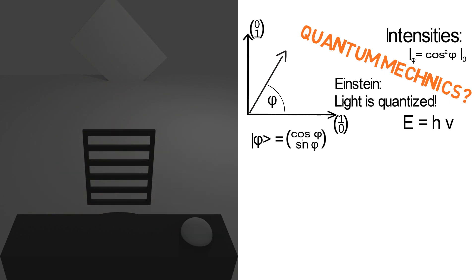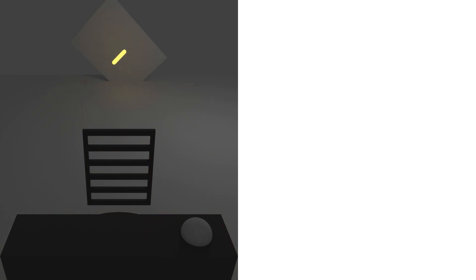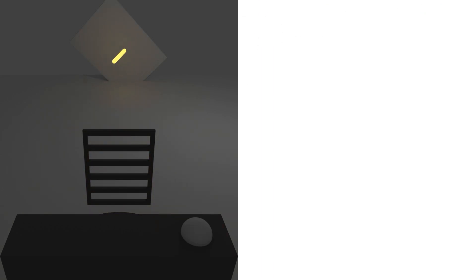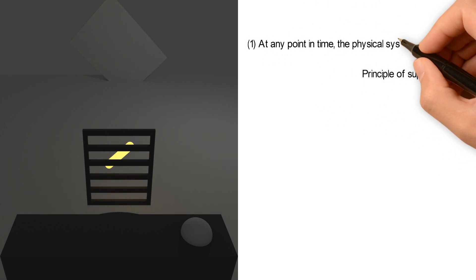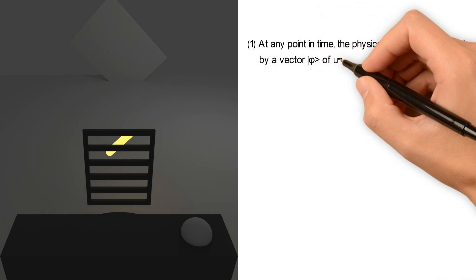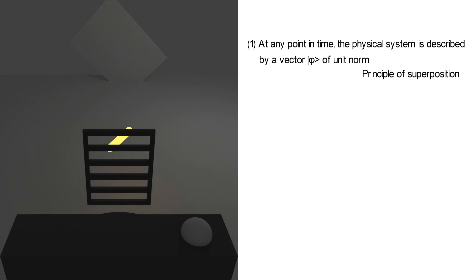Before we start rotating again there is a very simple but also crucial observation. The polarization state of a single photon is described by the state vector phi of unit norm. This seemingly simple fact is one of the foundational pillars of quantum mechanics and called the principle of superposition. At any point in time the physical system, which in our case is the polarization of a photon, is described by a vector phi of unit norm. Since multiplication by minus one does not change the physical polarization, we might squeeze up to multiplication of minus one into our principle.